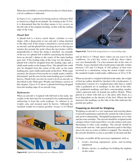In Figure 6-21, a spirit level is used on a Mooney M20 to check for a flight level attitude. By looking in the TCDS, it is determined that the leveling means is two screws on the left side of the fuselage in line with the trailing edge of the wing. Plumb Bob: A plumb bob is a heavy metal object (cylinder or cone shape) with a sharp point at one end and a string attached to the other. If the string is attached to a given point on an aircraft and the plumb bob hangs down so the tip just touches the ground, the tip is perpendicular to where the string is attached.